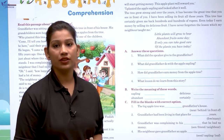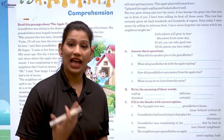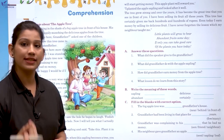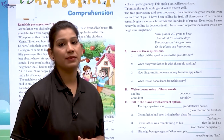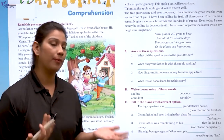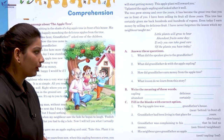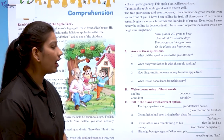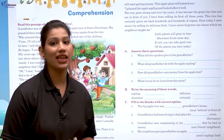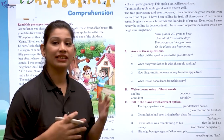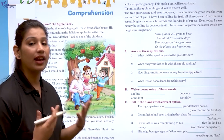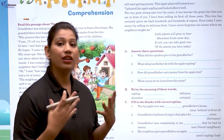What did the speaker give to the grandfather? As we know from the story, the answer is the apple sapling. So you can write: 'The speaker gave the grandfather an apple sapling.' What did grandfather do with the apple sapling? He planted it, took care of it, and grew the tree.